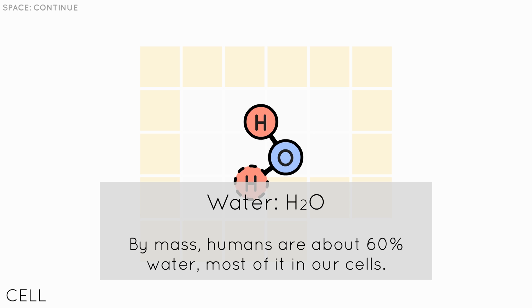Humans are about 60% water. Most of it is in our cells. We don't just have big water bladders. Well, I guess we do have one bladder, but you know.